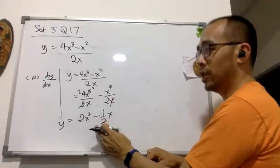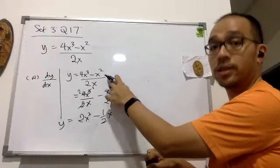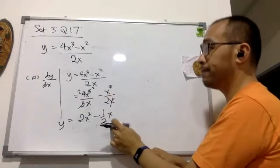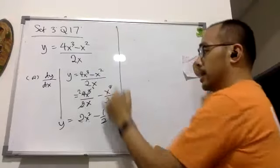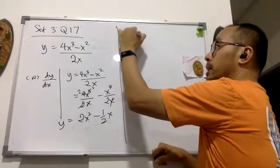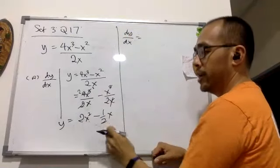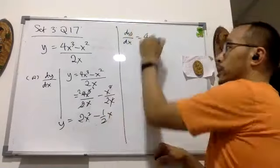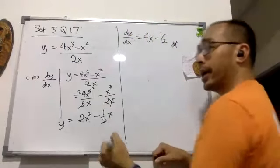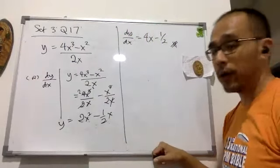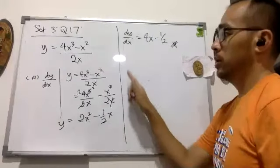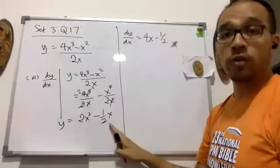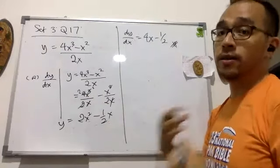This form is much easier to differentiate. If you can simplify it, simplify it first. Then from here, differentiating: dy/dx will be — differentiating 2x² gives 4x, and differentiating minus half x gives minus one half. That's the answer to part a. Remember: if you can simplify the equation before differentiating, simplify it first, otherwise it's too long and too complicated.